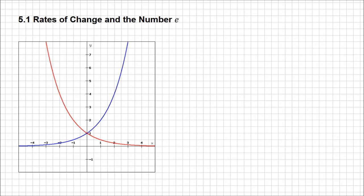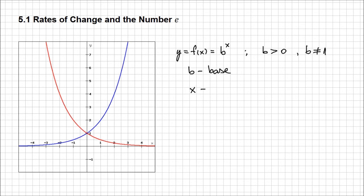Let's remember a few things about exponential functions. A general form for an exponential function is going to be denoted such as y or f of x equals b to the power x. b is a positive number and has to be different than one. We call b the base while x is the exponent. x is the independent variable — that's why it appears in the exponent, hence the name of the function being exponential.